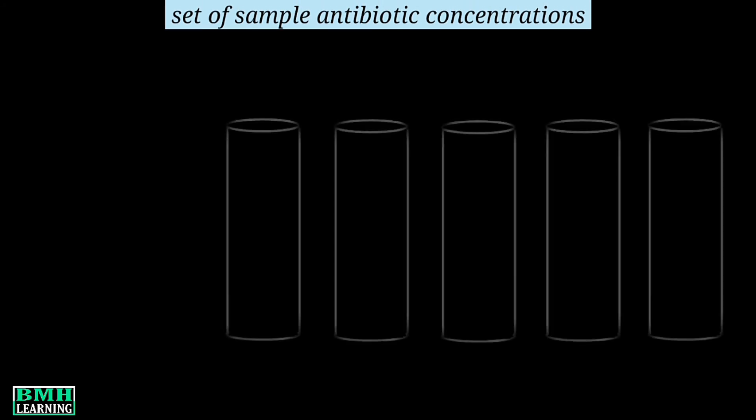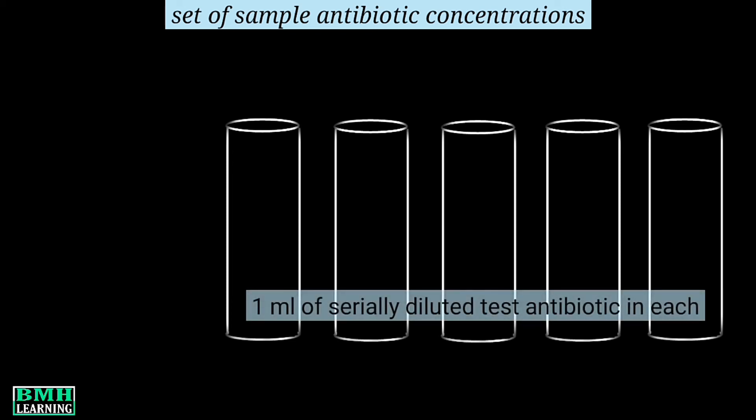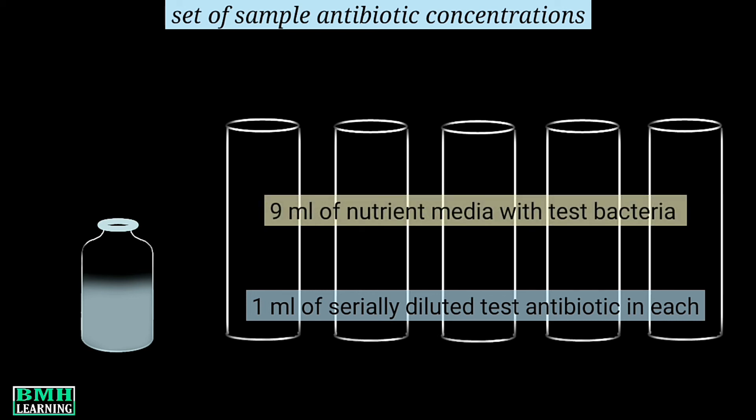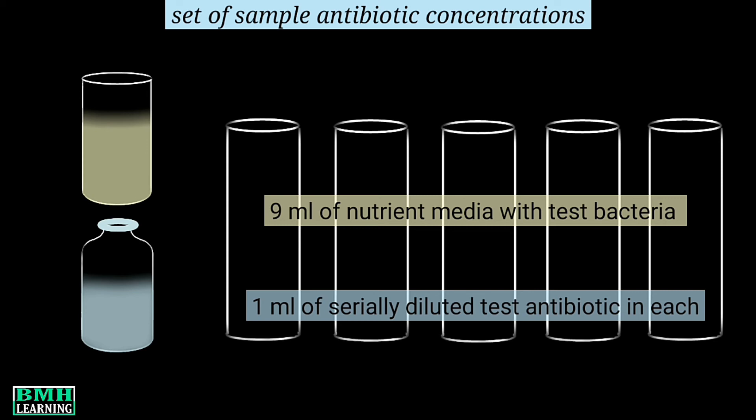Now let's make the same set for sample antibiotic. We have five tubes, and into these tubes we add serially diluted one ml of test antibiotic in increasing concentration. Similarly, we transfer 9 ml of nutrient media with test bacteria into these tubes.